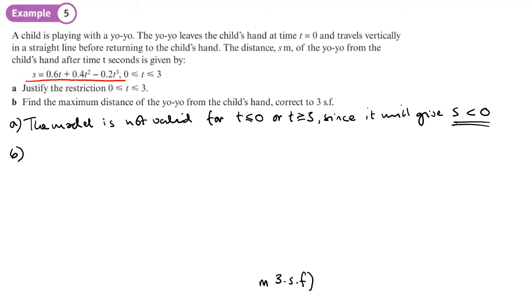Part B, find the maximum distance of the yo-yo from the child's hand. Maximum distance is going to be given by ds/dt equals 0. So let's differentiate S and find ds/dt. That would be 0.6 plus 0.8t minus 0.6t squared.